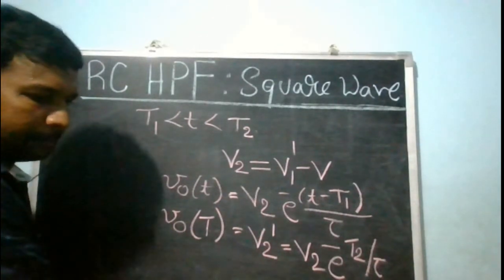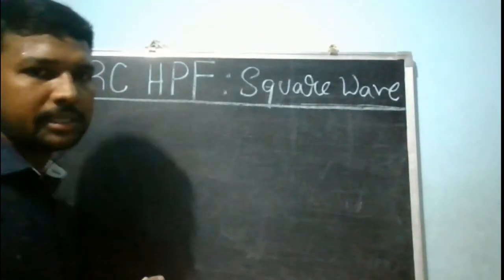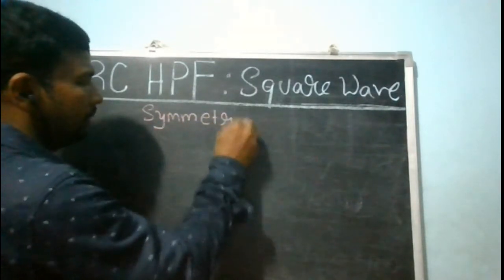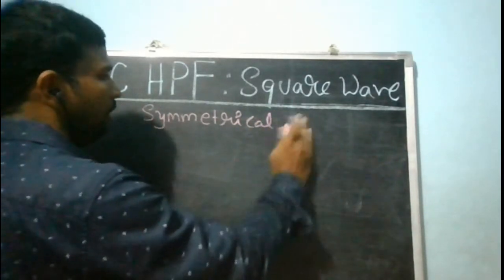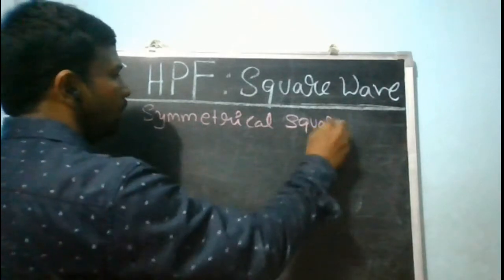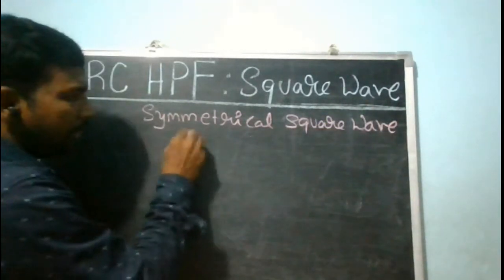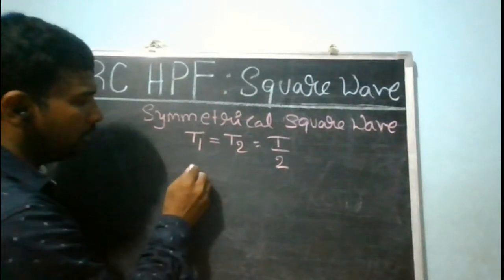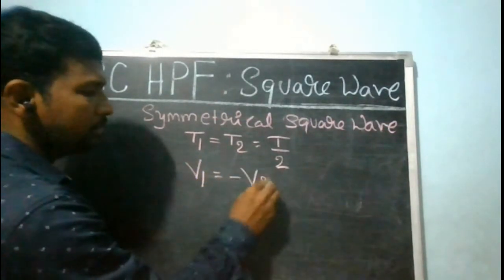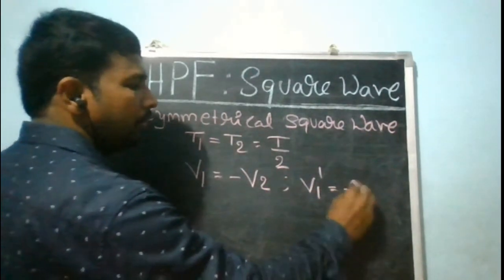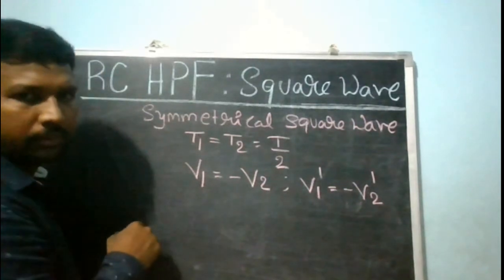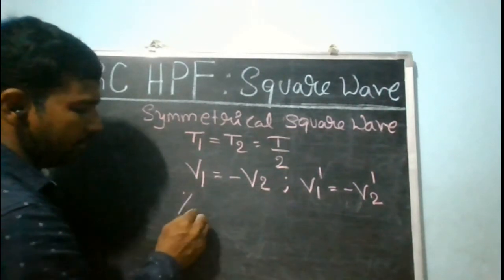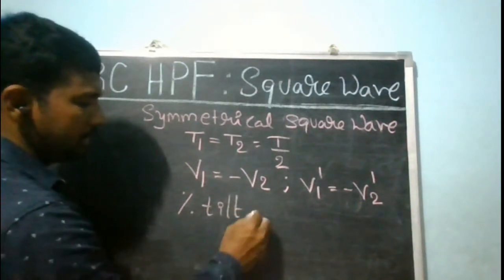Now let us consider a symmetrical square waveform. For a symmetrical square wave, the properties are: T1 = T2 = T/2, and moreover V1 = −V2 or V1' = −V2'. Now let us derive an expression for percentage tilt.